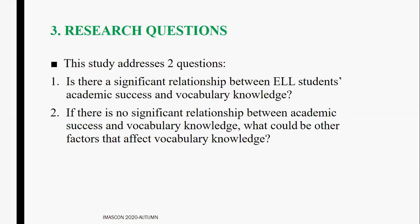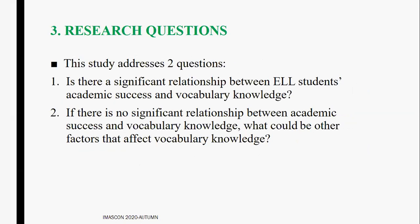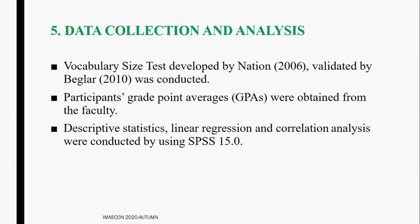Based on this literature, two research questions were investigated: first, whether there is a significant relationship between English language and literature department students' academic success and vocabulary knowledge; and second, if no significant relationship is found, what other factors might affect vocabulary knowledge. There were 20 senior-year participants at an English language and literature department at a public university, ages 18 to 23, with at least 10 years of formal English education. For data collection, the Vocabulary Size Test developed by Nation and validated by Dağlar was used, along with participants' GPAs, analyzed via SPSS.